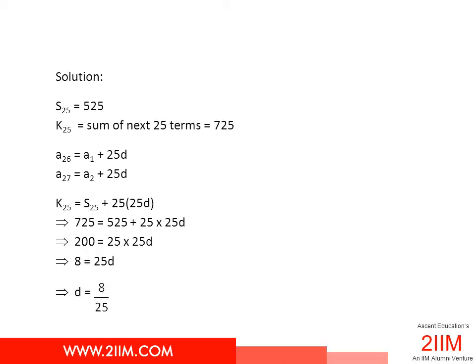Let's see if we can do this slightly differently. The sum of the first 25 terms is 525. They've given us a sum for the next 25 terms. Now the 26th term is going to be a1 plus 25 times common difference.